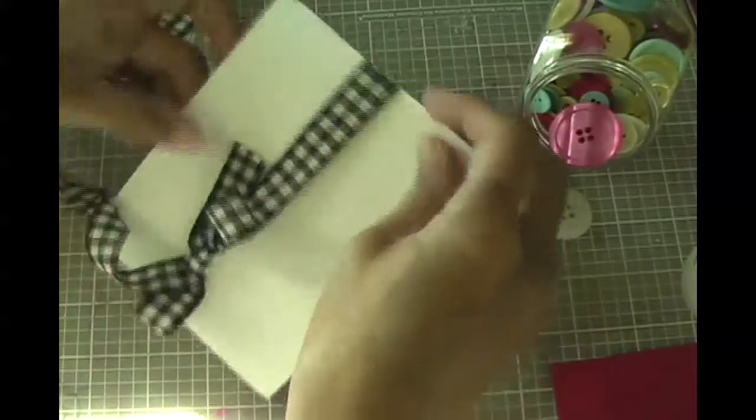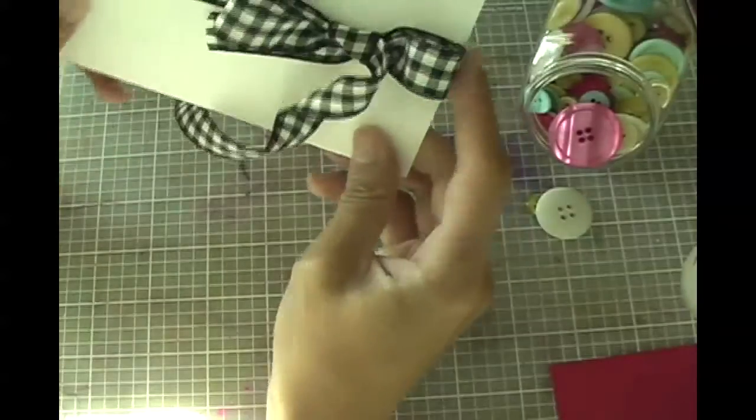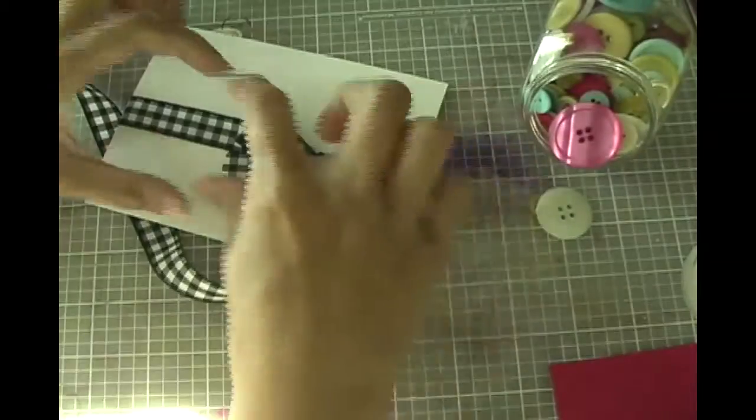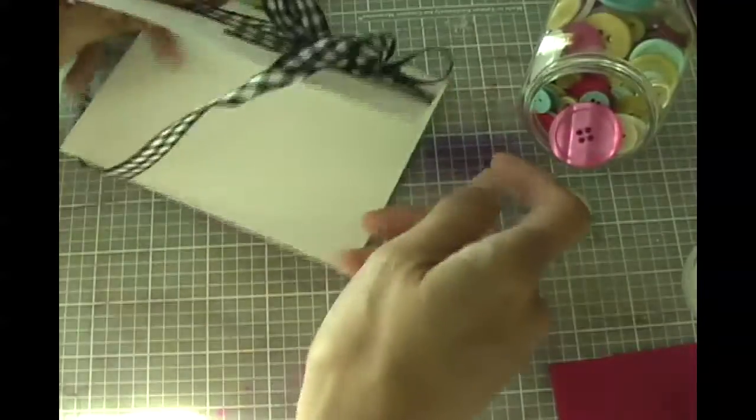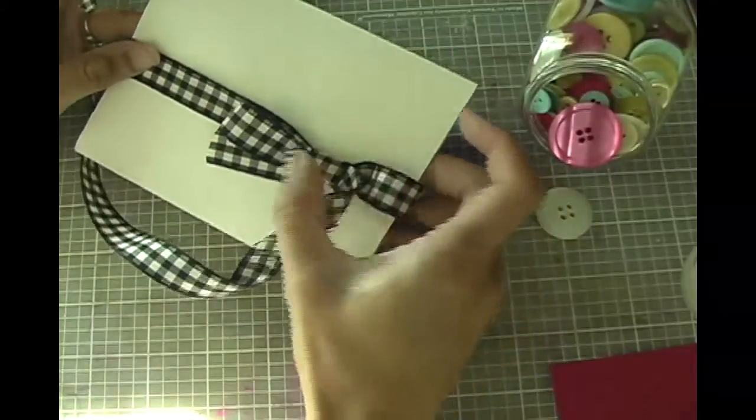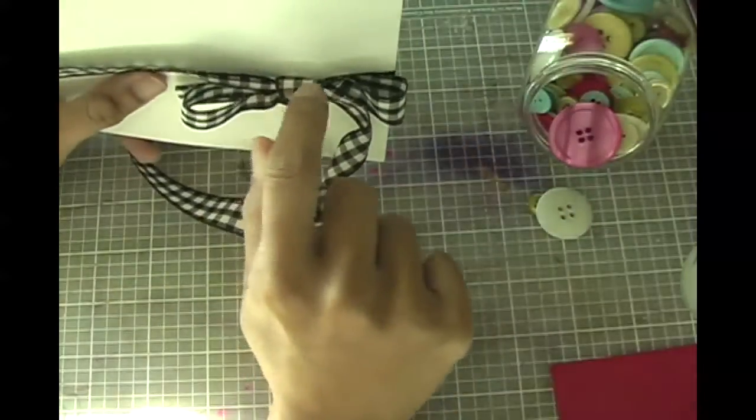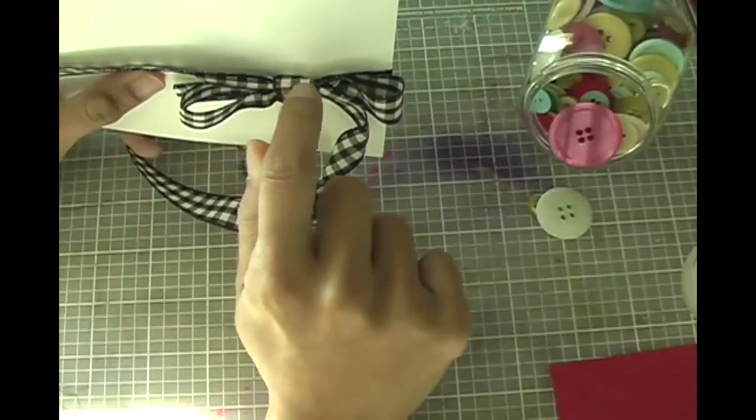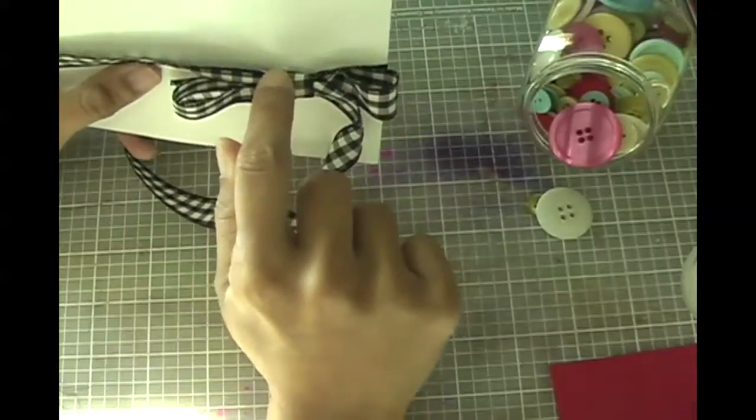And why do I go the opposite direction? Why can't I just make my ribbon go do it this way with the opening towards me? You can do that, but I like to have the one that loops around it to be on top.